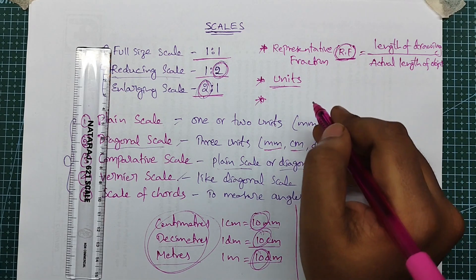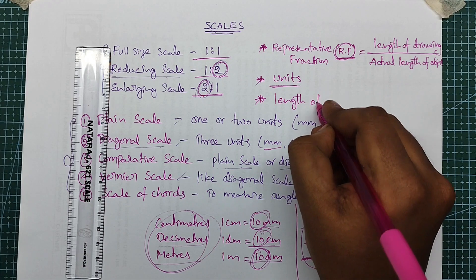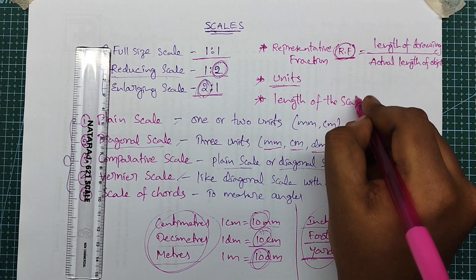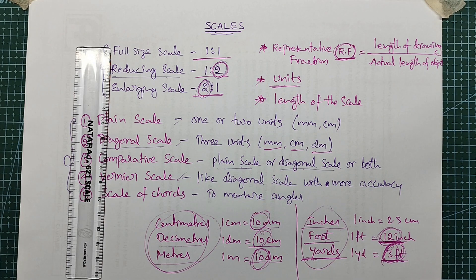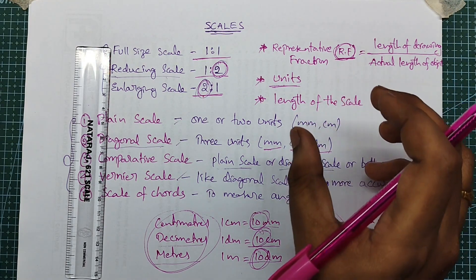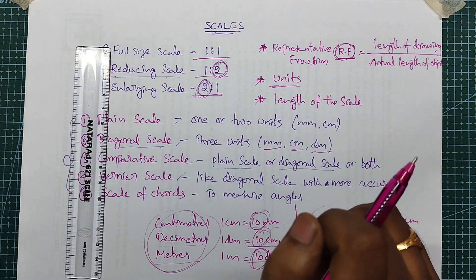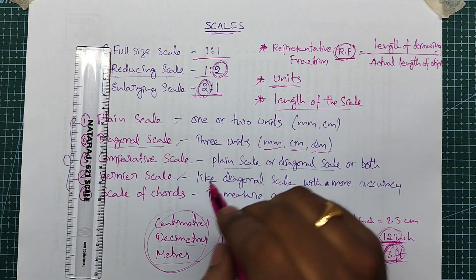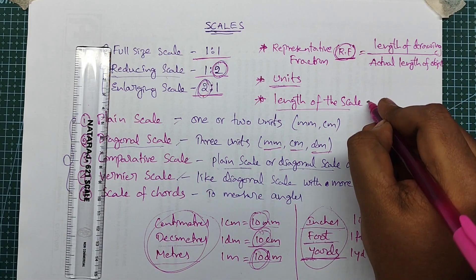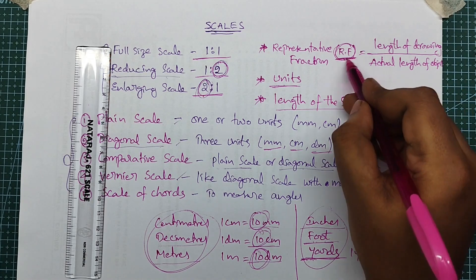The third and most important thing is the length of the scale. What is the length of the scale? We represent a path on scale. The formula involves RF multiplied by the maximum length to get the length of the scale.